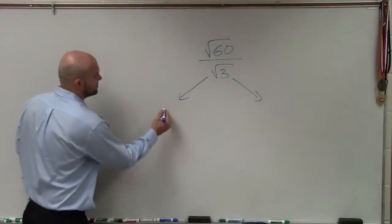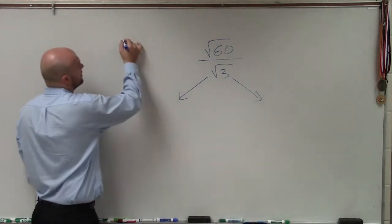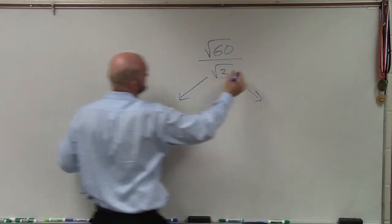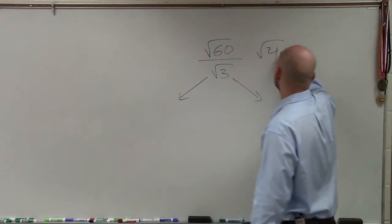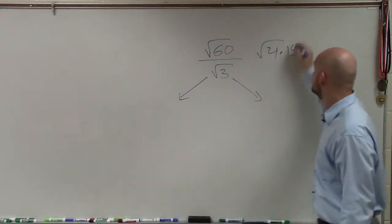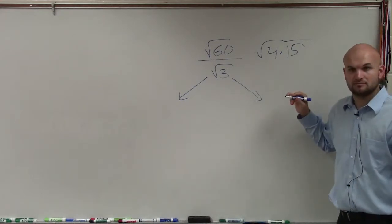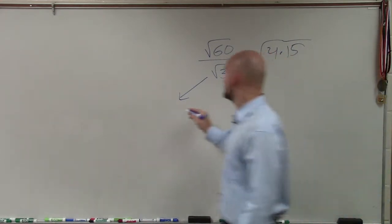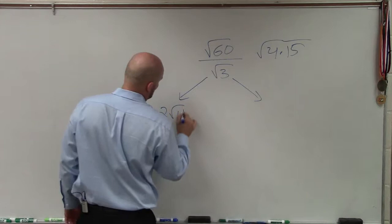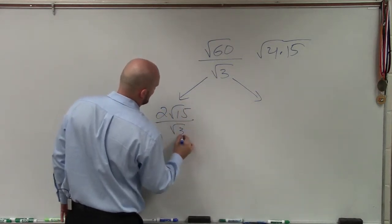So I can rewrite √60 as √(4 times 15). Would everybody agree with me? So therefore, I can reduce that to 2√15 over √3.